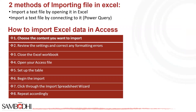Methods of importing a file in Excel. You can import a text file by opening it in Excel. You can open a text file that you created in another program as an Excel workbook by using the Open command. When opening a text file, Excel does not change the format of the file. You can see that in the title bar, where the name of the file remains the same.